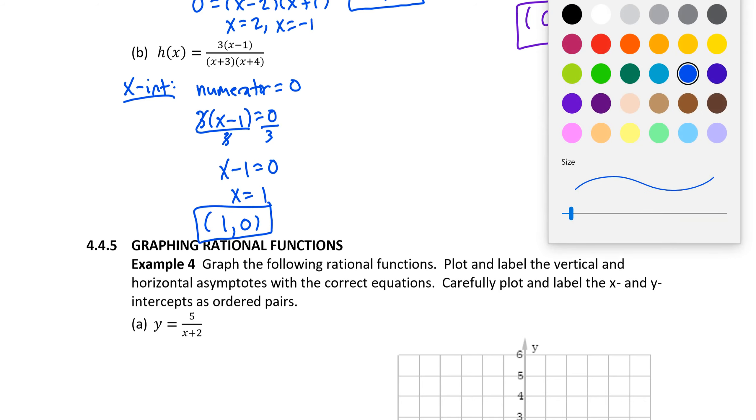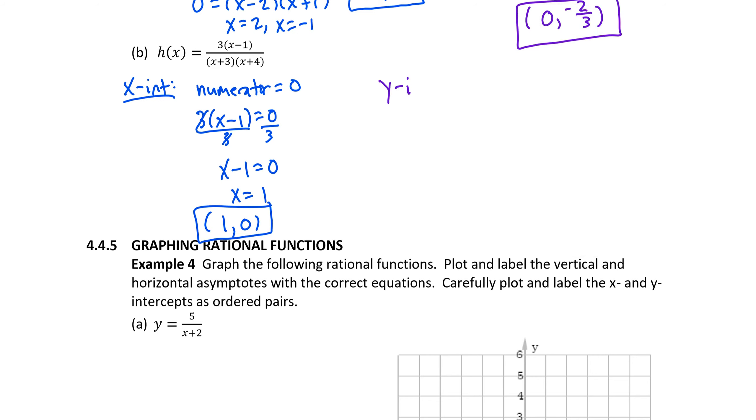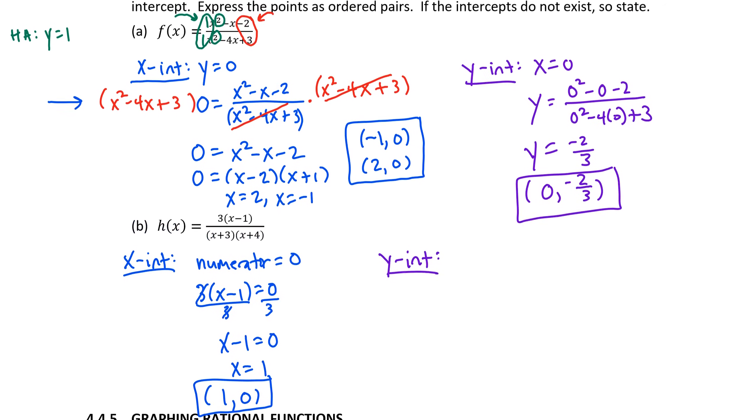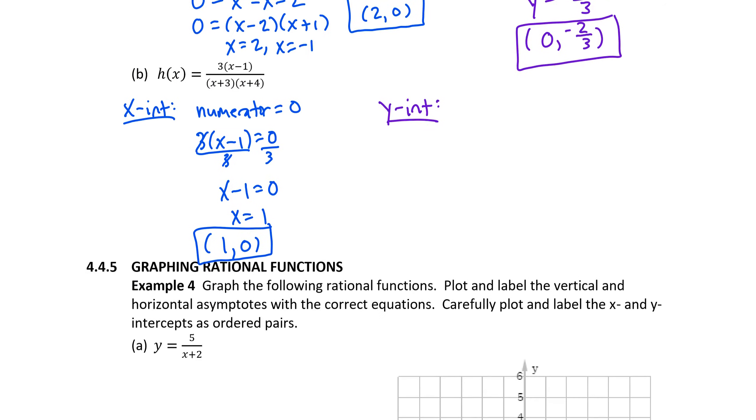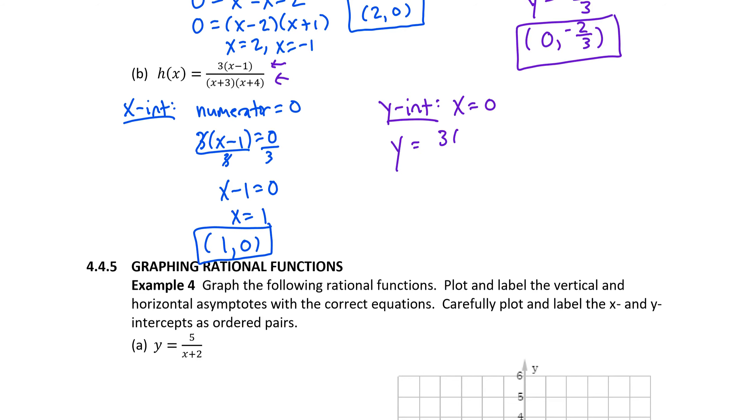To find the y-intercept, unfortunately, we cannot use the shortcut in this case. The reason is because notice in the first example, we had the polynomial in the top and the bottom completely multiplied out where we could identify those constant terms. In this case, the top and the bottom are factored, so I can't see those constants. So I'm going to go with the old traditional method of setting x equal to 0. I'm simply going to replace all the x's in the original problem with 0's and then calculate.